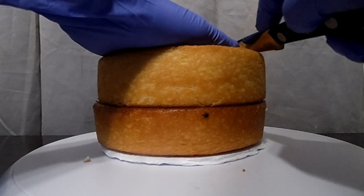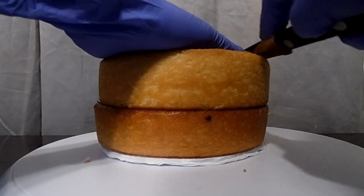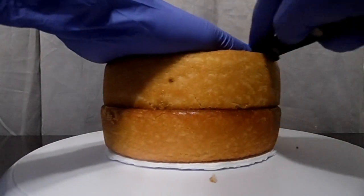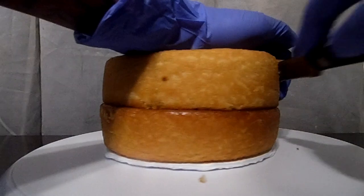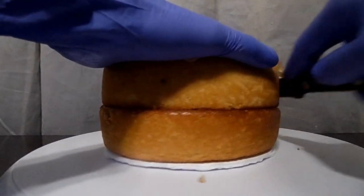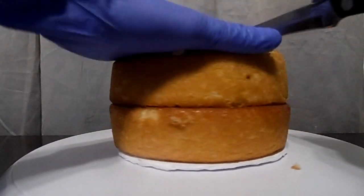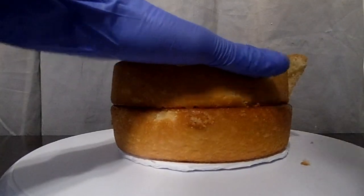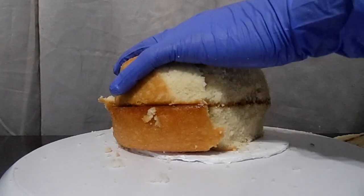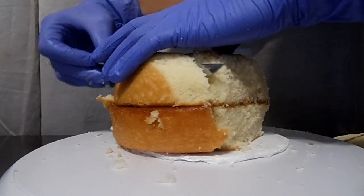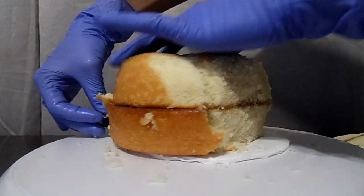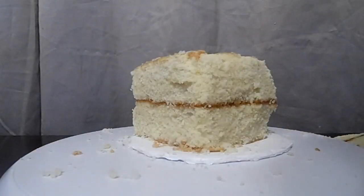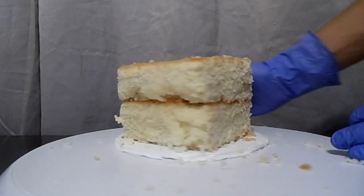So once you place those on top, you want to start to shape it using your knife to cut it kind of like a square. And once you cut off that excess, I used the last piece to place on top. So as you can see, it's cut into a square.